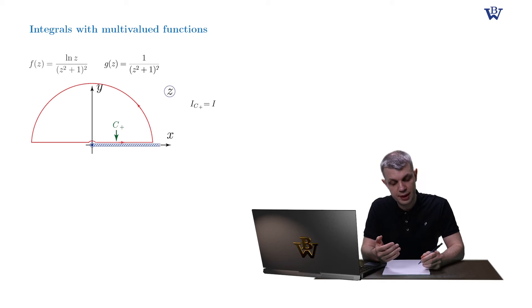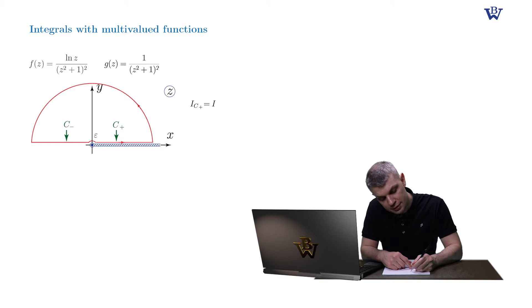Then there is c-minus part running along the negative real axis plus the infinitesimal circular integral and plus the integral along the large semicircle.